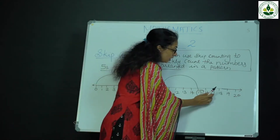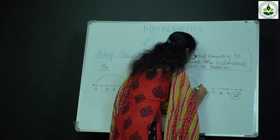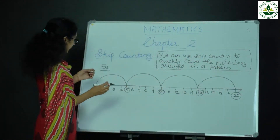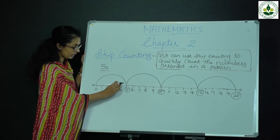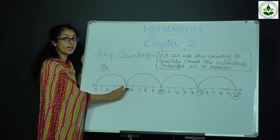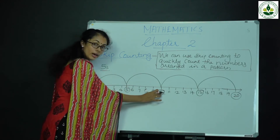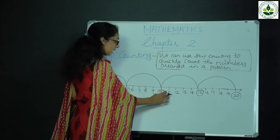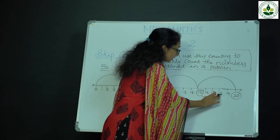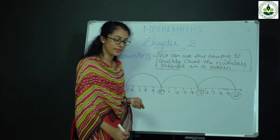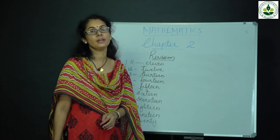Then again count 5 times: 1, 2, 3, 4, 5 — that is number 20. So 15 to 20. Starting from 0: count 5 times to reach 5, then 5 times to reach 10, then 5 times to reach 15, then 5 times to reach 20.